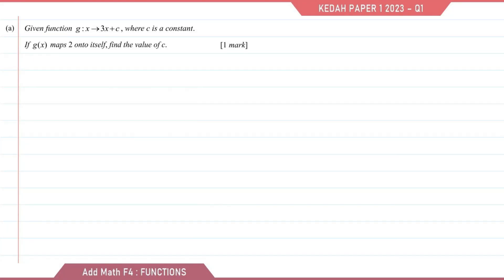Question A. Given functions g maps x to 3x plus c where c is a constant, if g maps 2 onto itself, find the value of c.